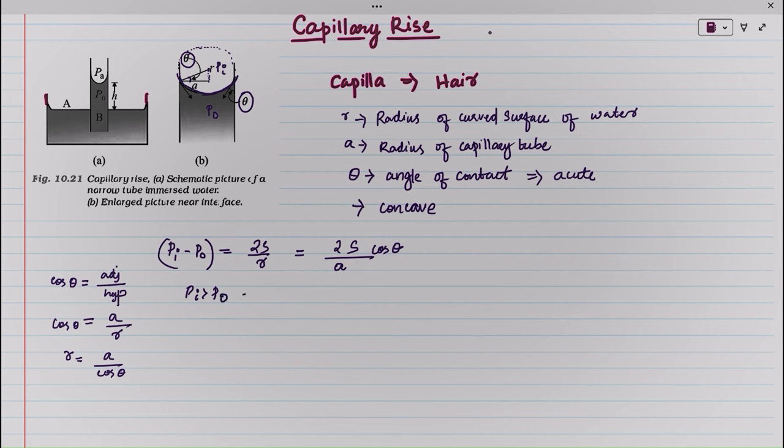This is equation number 1. Thus the pressure of the water inside the tube, just at the meniscus, is less than the atmospheric pressure.